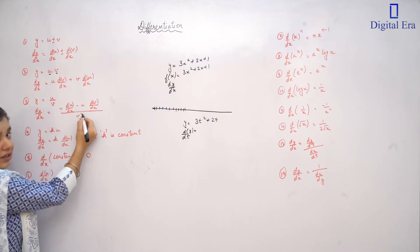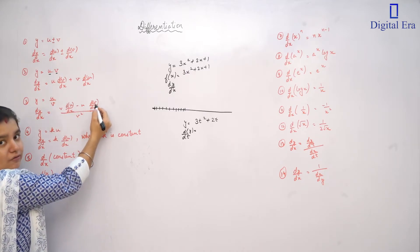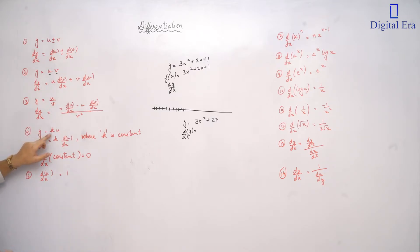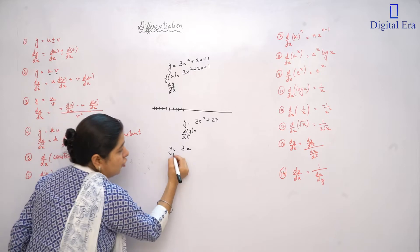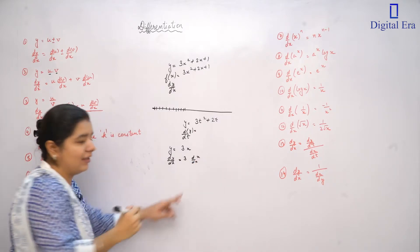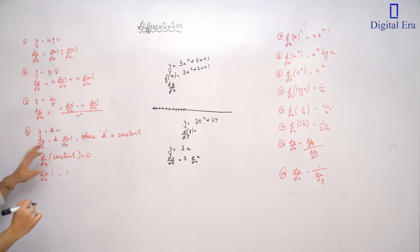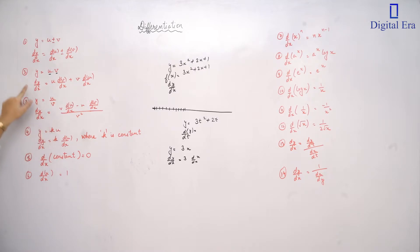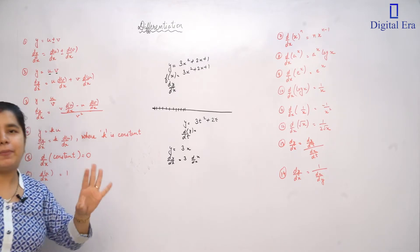Next, if y equals k times u, where k is a constant — for example y equals 3x — then the derivative is k times the derivative of u. The constant stays, and we differentiate the variable part. If k is a variable, then we use the multiplication rule. Also, the derivative of any constant — like 5, minus 2, or 1/2 — is zero.